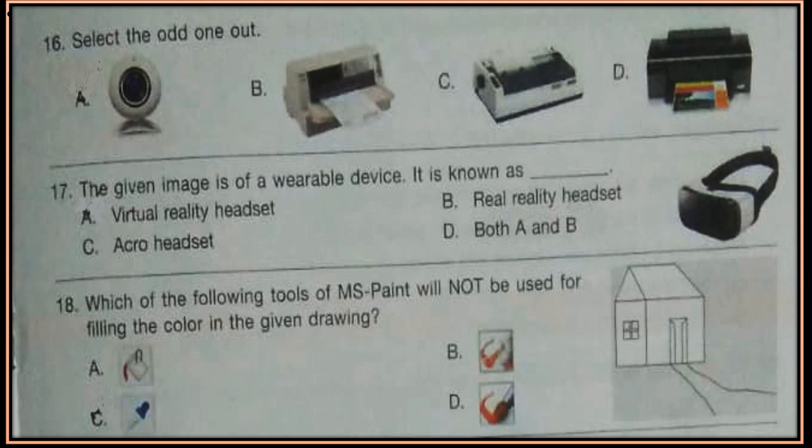Question 16. Select the odd one out. See the four options given and select the odd one out. Question 17. The given image is a wearable device. It is known as: virtual reality headset, real reality headset, acro headset, or both A and B?